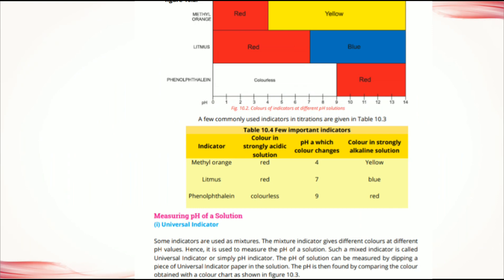Some indicators are used as mixtures. A mixture of indicators gives different colors at different pH values, and hence it is used to measure the pH of a solution. Such a mixed indicator is called a universal indicator, or simply a pH indicator.